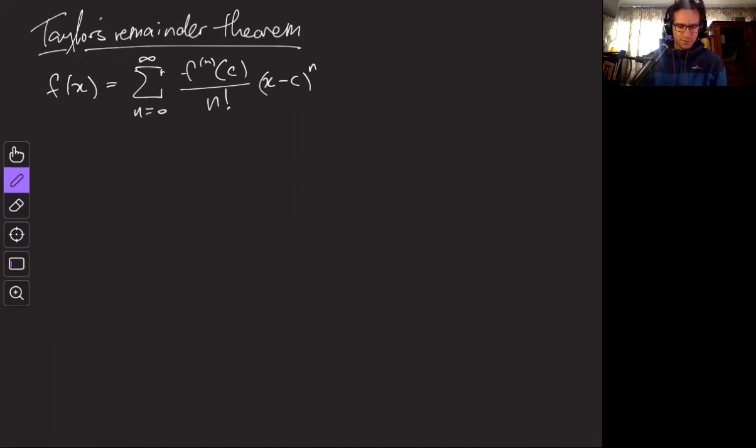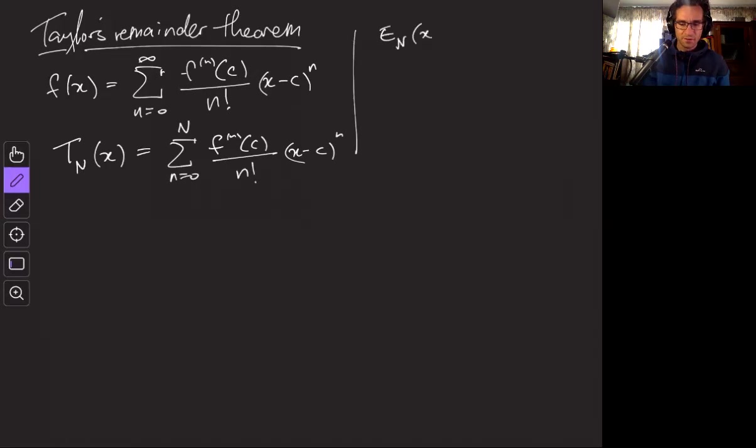Okay and so we can get the Taylor polynomial, so let's say the nth order Taylor polynomial for f is the sum up to n, capital N. So the same thing but now it's a finite sum, and then the remainder theorem...